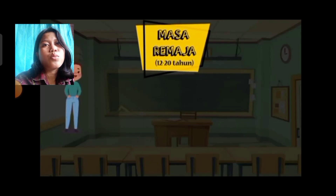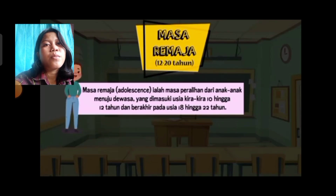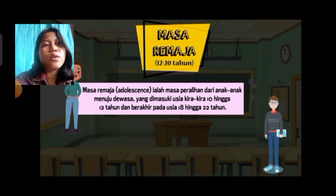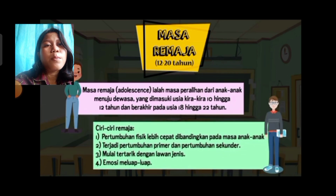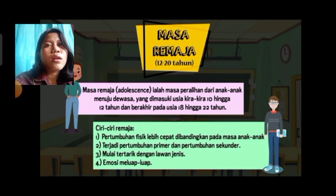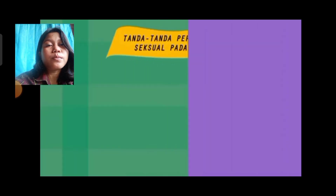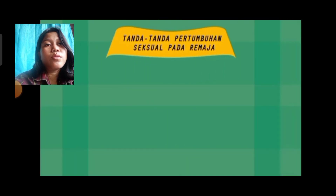Masa remaja berlangsung dari 12 sampai 20 tahun, merupakan masa peralihan dari anak-anak menuju dewasa, dimasuki usia kira-kira 10 hingga 12 tahun dan berakhir pada usia 18 hingga 22 tahun. Ciri-ciri remaja: pertumbuhan fisik lebih cepat dibandingkan masa anak-anak; terjadi pertumbuhan primer dan pertumbuhan sekunder; mulai tertarik dengan lawan jenis; dan emosi meluap-luap.